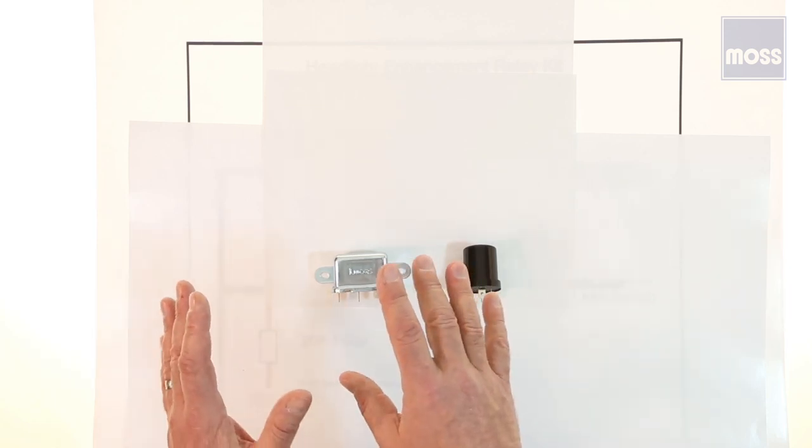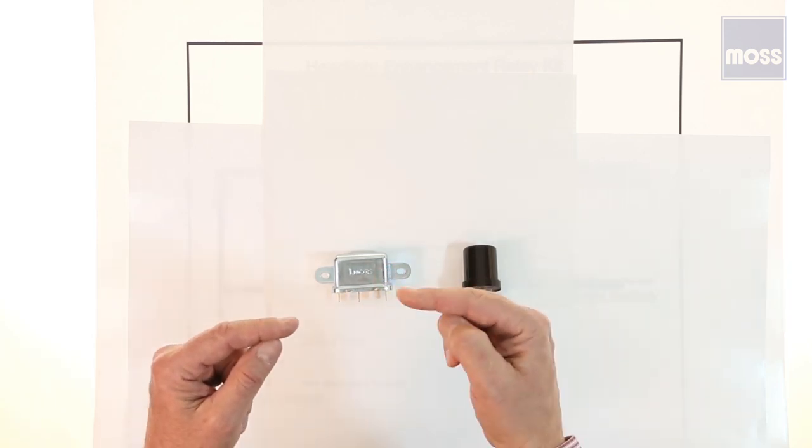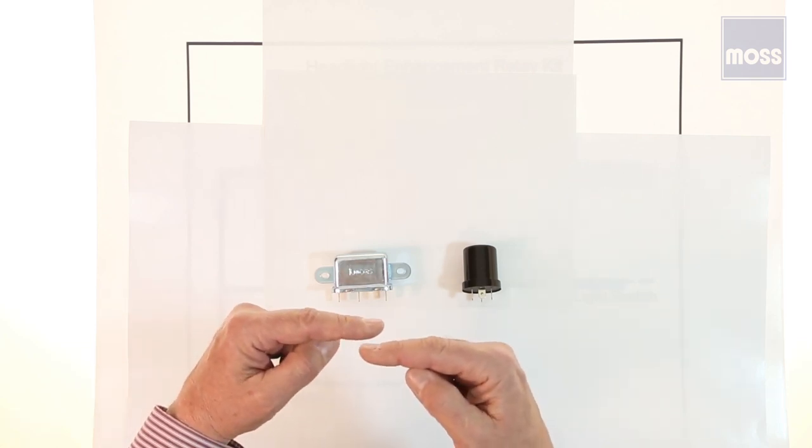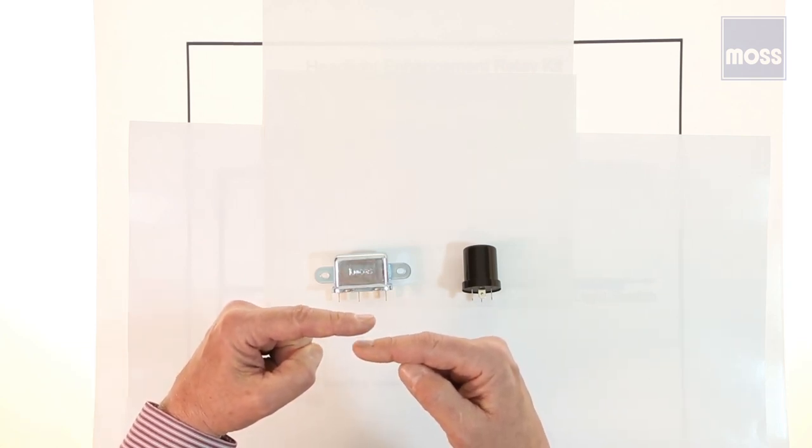A simple relay has four wires. Two wires go in from one side to the other. If you could look inside with Superman's eyes, you would see a set of contacts in there. They're open, not touching.